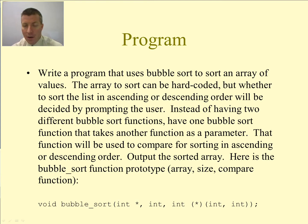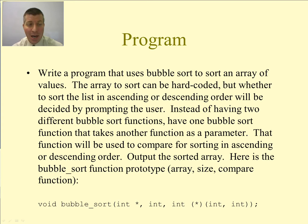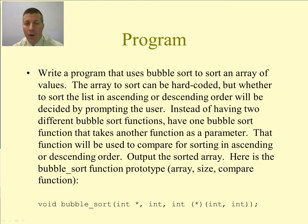Instead of having two different bubble sort functions, we're going to have one bubble sort function and it's going to take a function as a parameter. That function is going to determine whether or not we are going to be sorting in ascending or descending order.